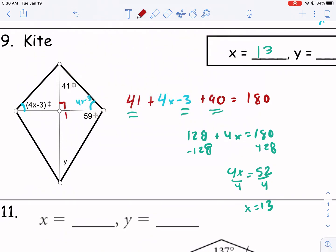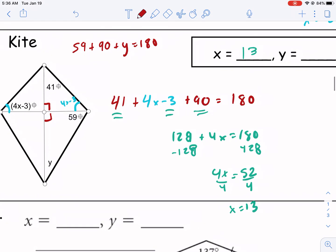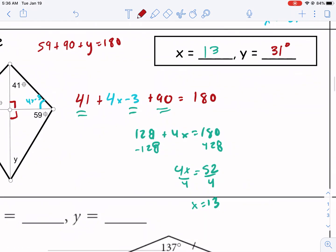And then we have a very similar process to find y. This is like our other problem, so I'm not going to spend too much time. We have 59 plus 90 plus y equals 180. And we just subtract those from 180. 180 minus 59 minus 90, and we get 31. Don't forget it's degrees.